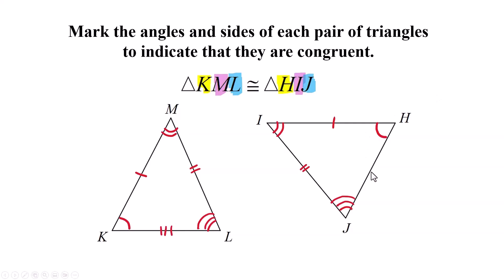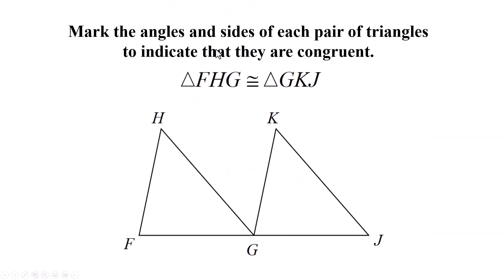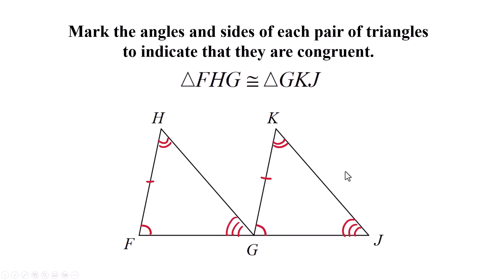The third side is left by process of elimination. Now: triangle FHG is congruent to triangle GKJ. F has to be congruent to G — mark these on each triangle. Be careful, there are three angles at G, but we're talking about these two triangles specifically. H is congruent to K, and G on this triangle is congruent to J on the other. The side between angle-mark one and angle-mark two is FH, congruent to GK. Then H to G is congruent to its corresponding side on the other triangle.